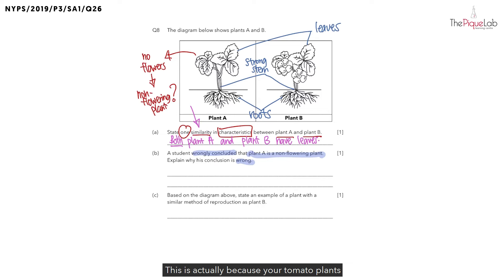This is actually because your tomato plants are still a young plant. When do you think the plant will be able to start producing flowers? They will only be able to produce flowers when they are in the adult stage. So if you do not see any flowers on the plant, can you say definitely that it is a non-flowering plant? You cannot, because it might be a young flowering plant.